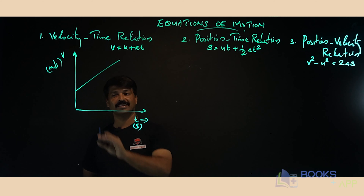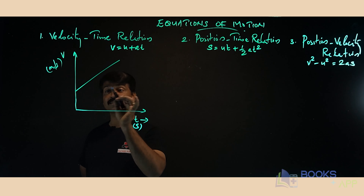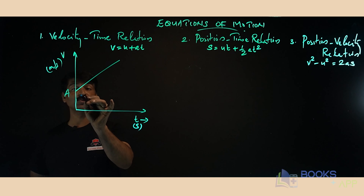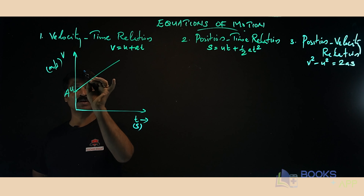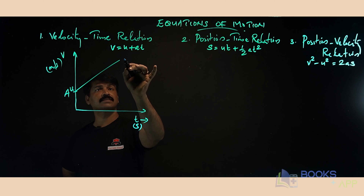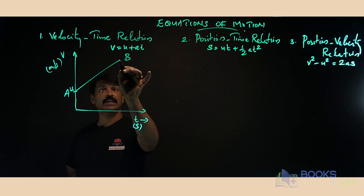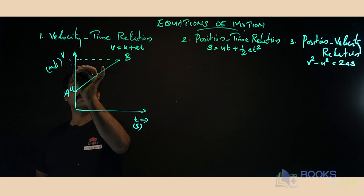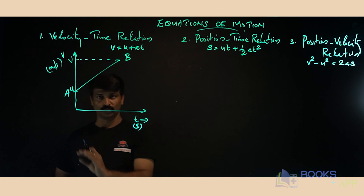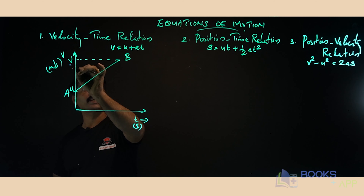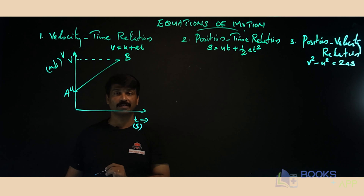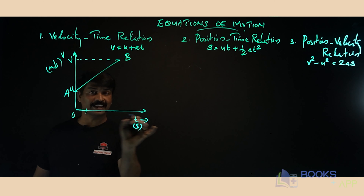Here the object has some initial velocity. If the graph passes through the origin, its initial velocity would be zero. But here the object starts from point A, moving with an initial velocity of u meters per second. After some time, the object is at point B, where the final velocity is v meters per second.